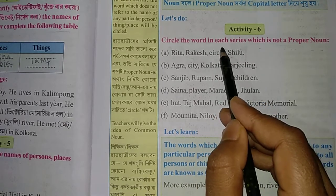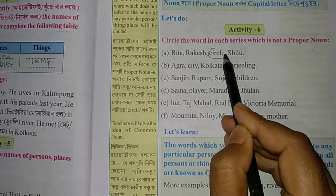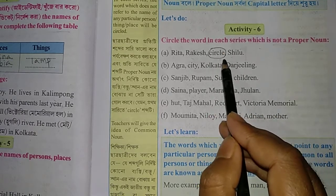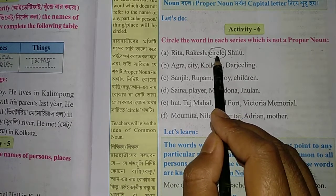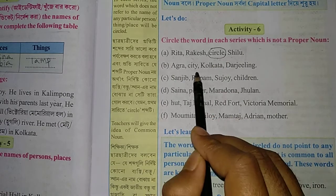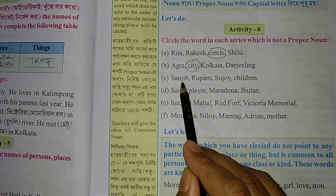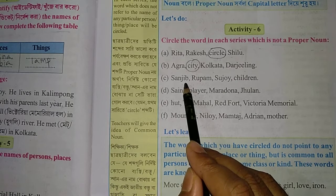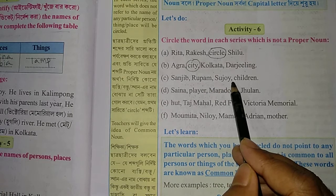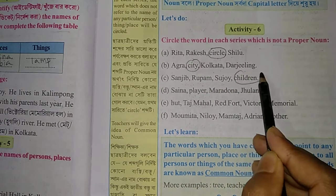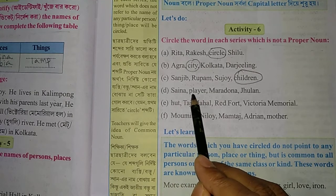Circle the word that is not a special name and not a person — that is not a proper noun. For example: Agra, Kolkata, Darjeeling are city names — proper nouns. Sanjeeb, Rumpa, Rupam, Sujoy are children's names — proper nouns. But a common word like 'children' is not a special name, so it is not a proper noun.